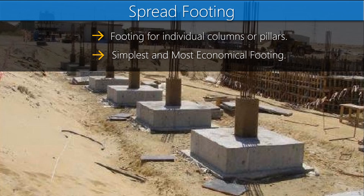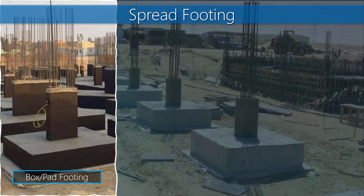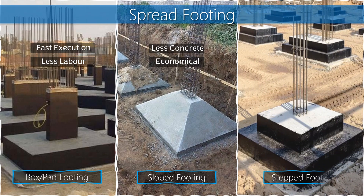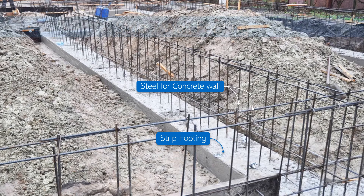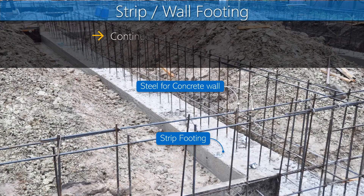Isolated spread footing can be of three types. First, pad or box footing — this type is fast in execution and requires less labor. Second, slope footing — this type is economical in concrete quantity but requires more labor. Third is step footing.